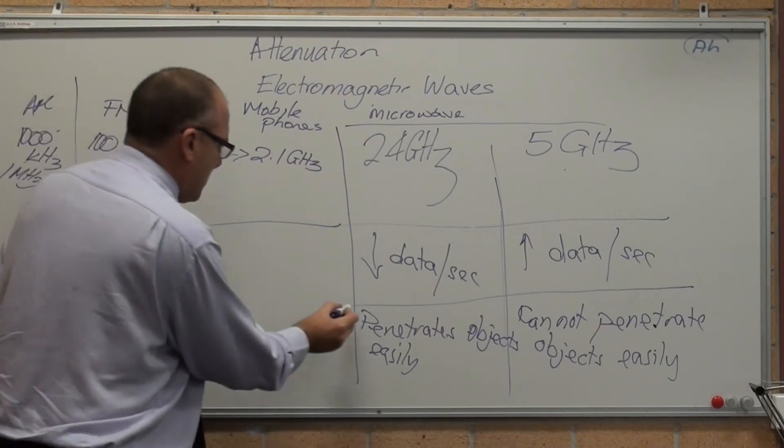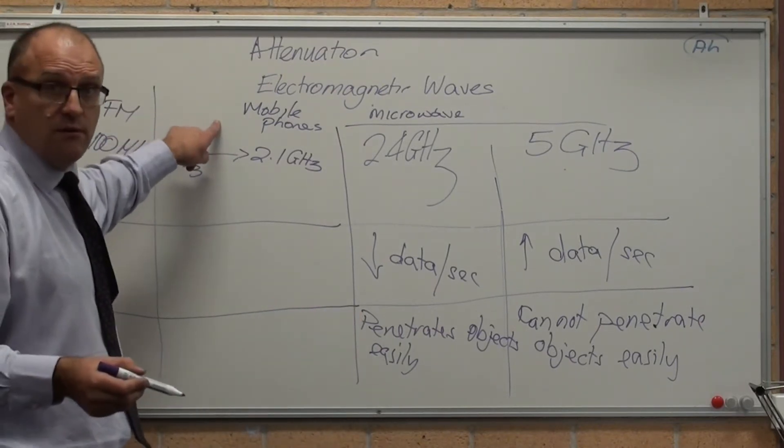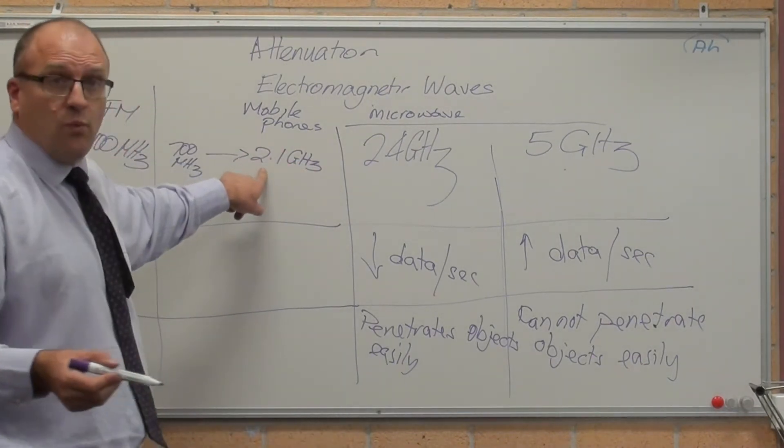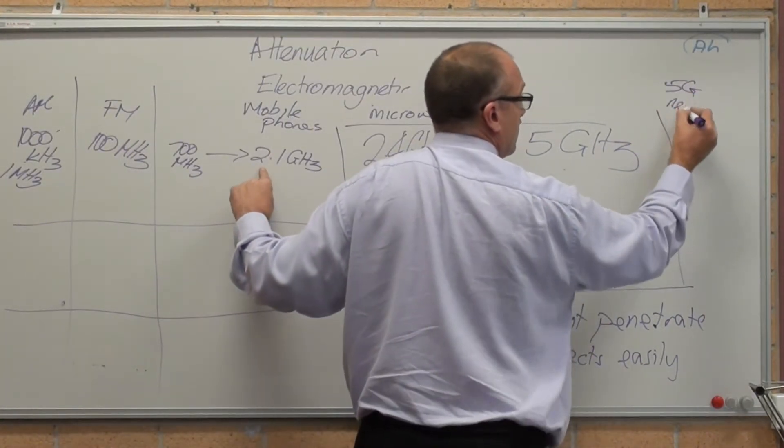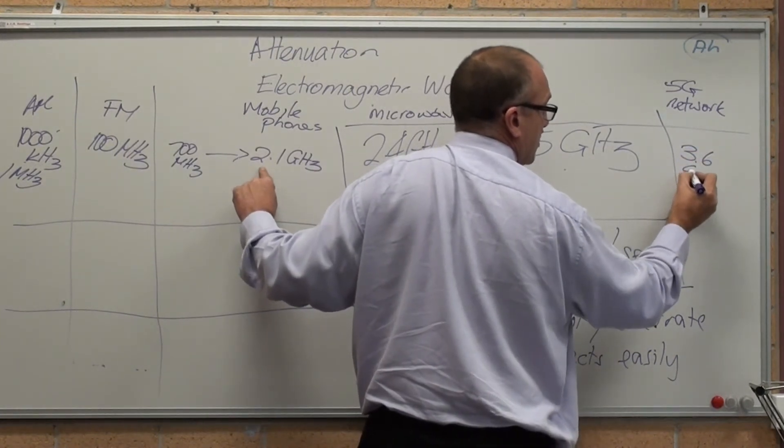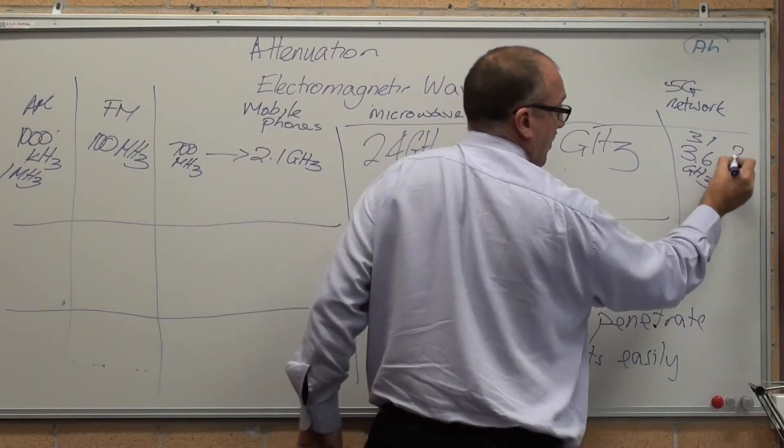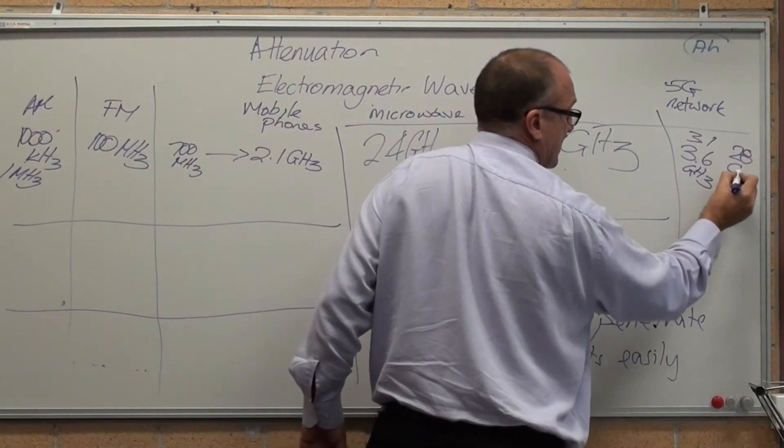We don't really transmit data using FM or AM. Mobile phones we do. 4G is working at 2.1 GHz. 5G, IG Net, it's currently working on the 3.6 GHz band. And it's going to go up to, eventually, the 28 GHz band.